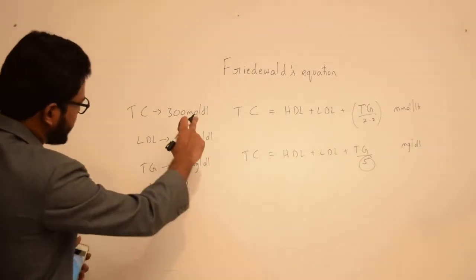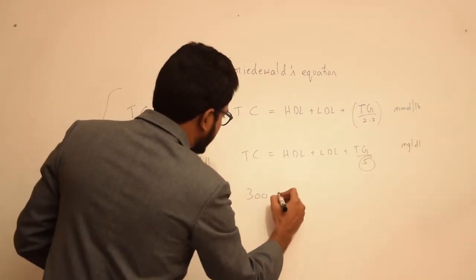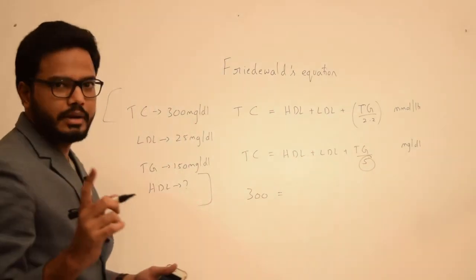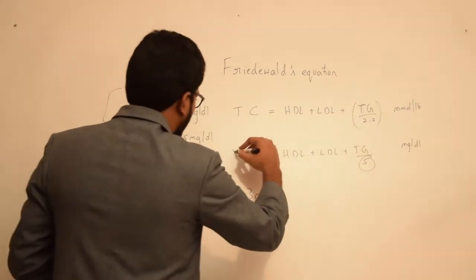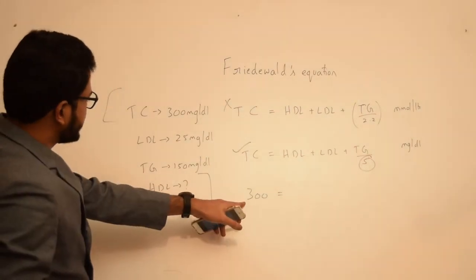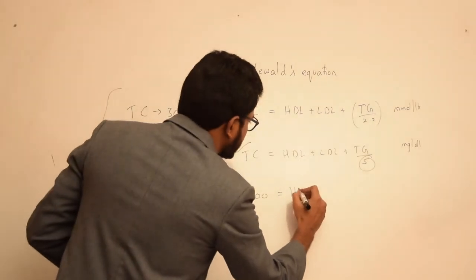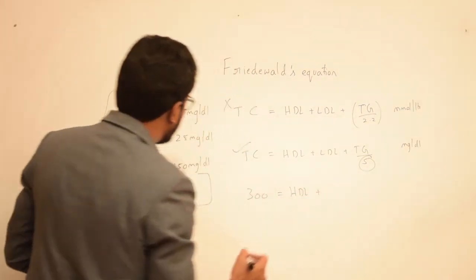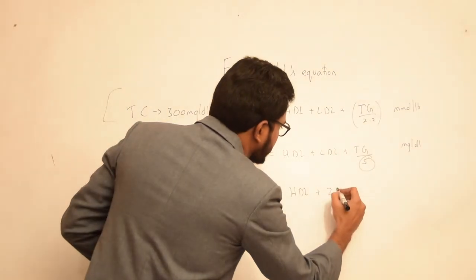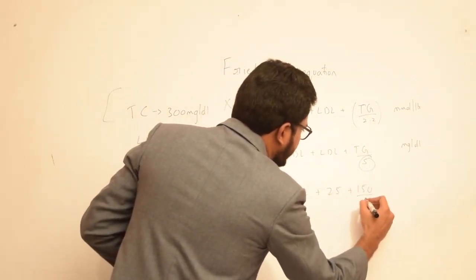So total cholesterol as per the question is 300 milligrams per deciliter. Since it's in milligrams per deciliter, we need to use the following formula. So total cholesterol 300 is equal to HDL - we need to find out this HDL. And the value of LDL is 25, and triglycerides is 150 divided by 5.